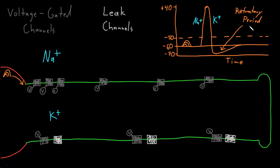The refractory period is divided into two parts. The first is called the absolute refractory period. It's absolute because the voltage-gated sodium channels, when they first close, enter a special inactivated state and are unable to open at any membrane potential for a brief time, so that no matter how much excitatory input comes into the neuron, you cannot trigger another action potential during the absolute refractory period.